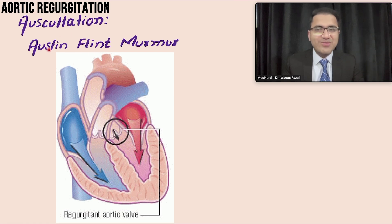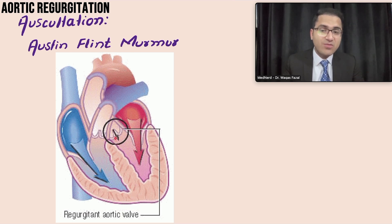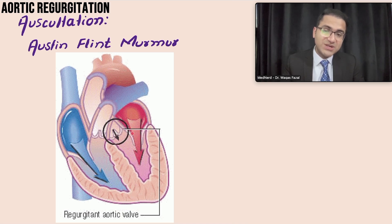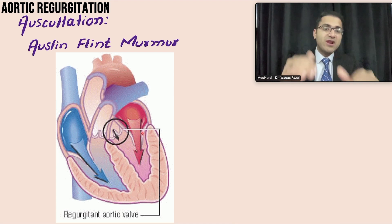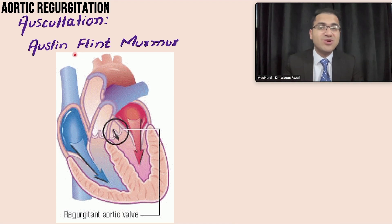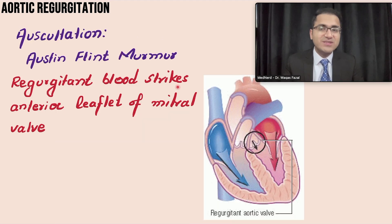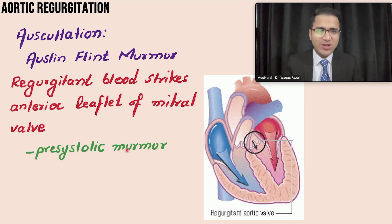Another important point to remember is the Austin Flint murmur, frequently tested in exams. When blood gushes back from the aorta into the left ventricle just before systole, it pushes the anterior leaflet of the mitral valve, causing its closure and producing a murmur — the Austin Flint murmur. This regurgitant blood striking the anterior mitral leaflet results in a presystolic murmur occurring just before systole during the diastolic period.